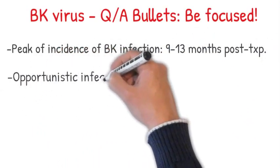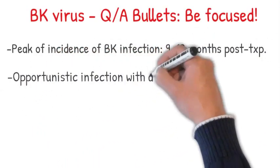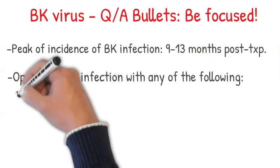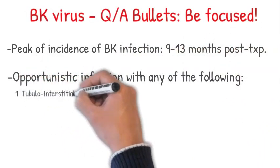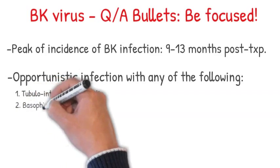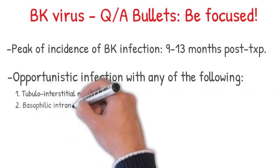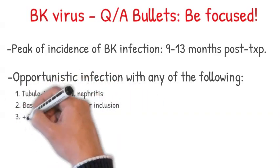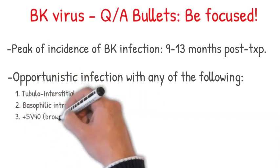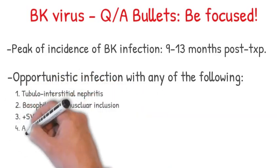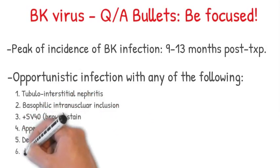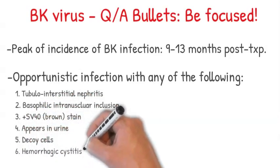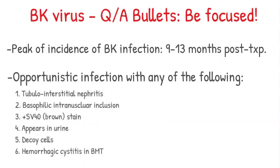If you see any opportunistic infection with any of the following keywords: tubular interstitial nephritis, basophilic intranuclear inclusions, positive SV40 brown staining, decoy cells appearing in urine, hemorrhagic cystitis in a bone marrow transplant recipient — we're most probably talking about BK virus.